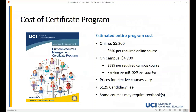Estimated fees for completing the program in a classroom setting are approximately $4,700, and for the online format $5,200. Required online classes are $650 each and on-campus classes are $585 each; elective courses vary in price. You pay for each class as you enroll rather than the entire tuition at once. Some courses require textbooks not included in fees — students may purchase from any vendor, though Amazon is popular for its options and competitive shipping. There is also a $125 candidacy fee, and an evening parking permit for one quarter costs about $50.